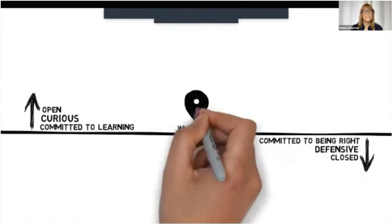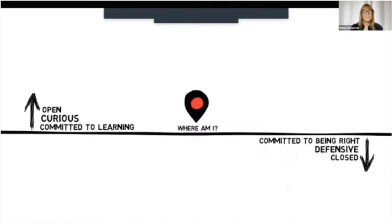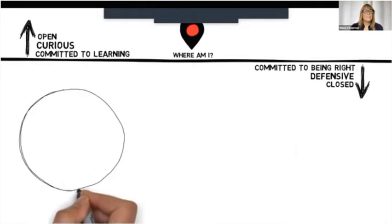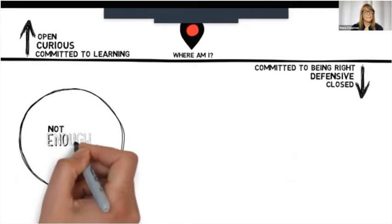Stop right now and simply ask yourself: where am I in this now moment? Am I above the line or below the line? Typically, when people are below the line, they believe certain things about the world.